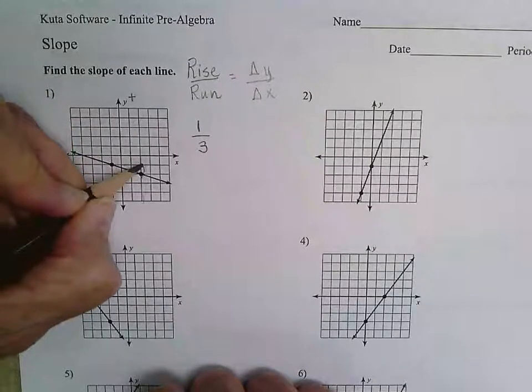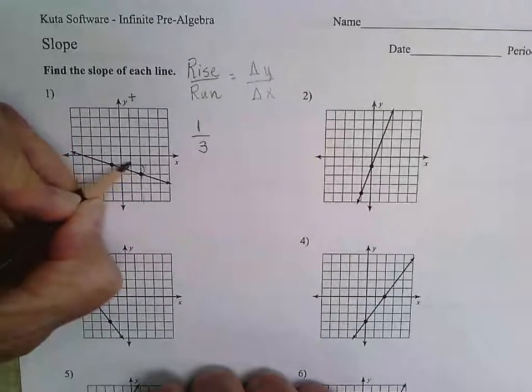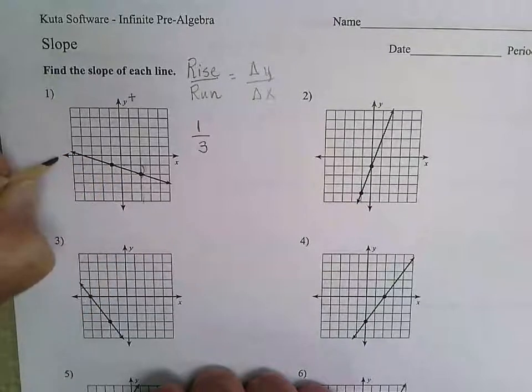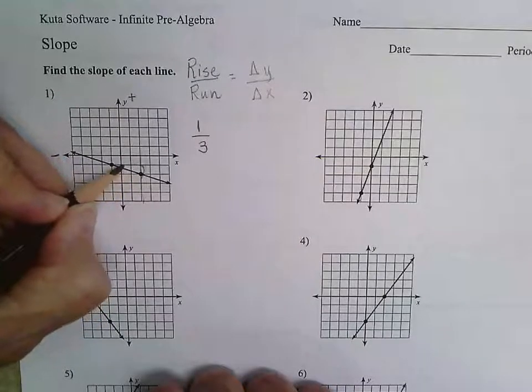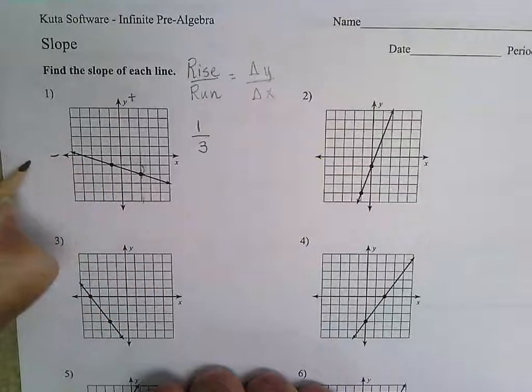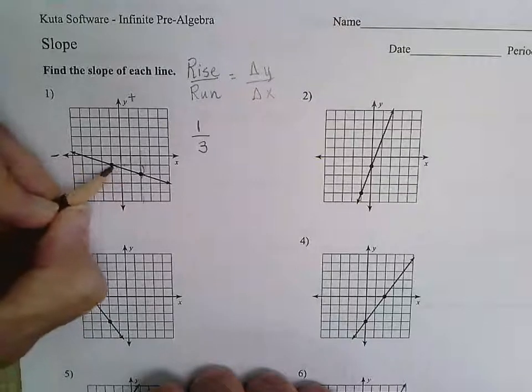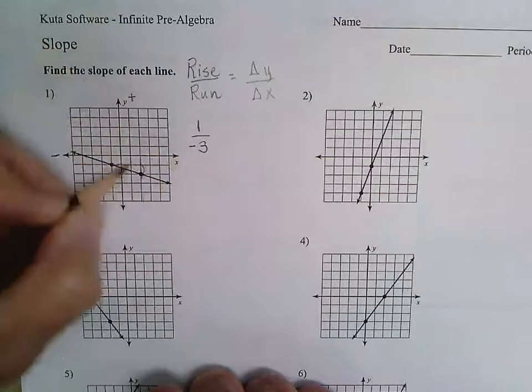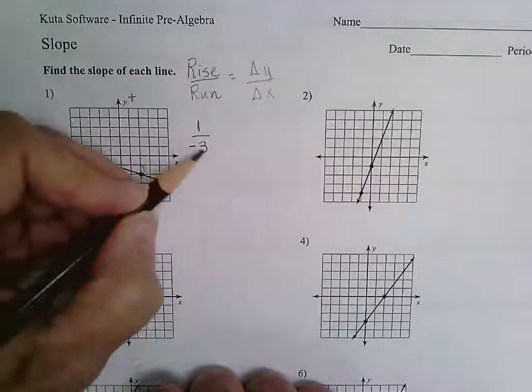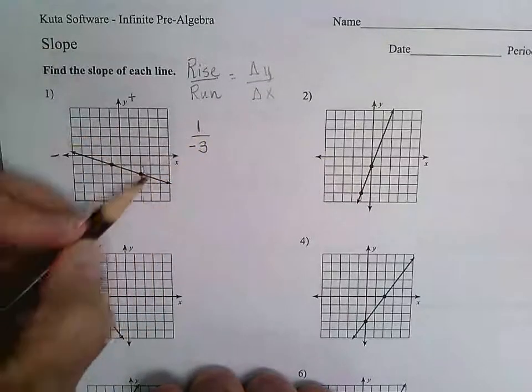When we go from this point over 1, 2, 3 we are going towards the negative side of the x axis. We are going in that direction. So this ends up being the negative which is making the entire slope negative.